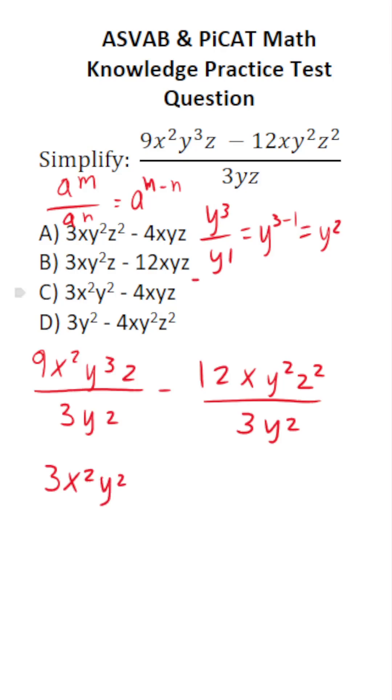And then we have z over z. z to the first power over z to the first power is equal to z to the 1 minus 1, z to the 0. z raised to the 0 power is just 1. So in other words, it just disappears.